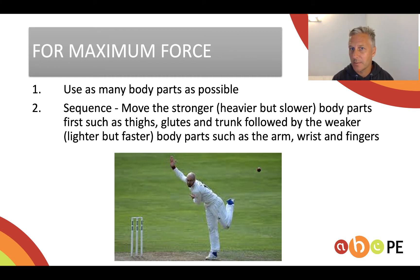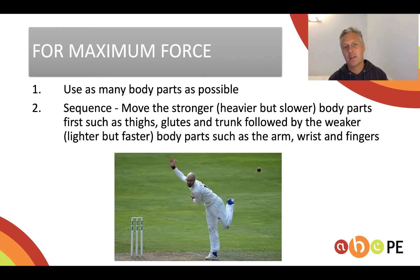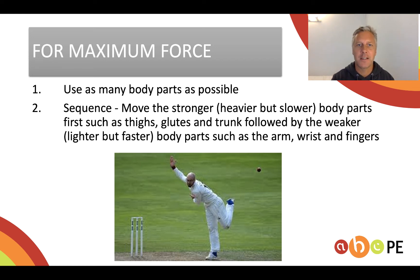Remember: mass times velocity. And then we start to bring in body parts that are smaller, weaker, lighter but faster — such as the arm, wrist and fingers. The fastest body part needs to be the part that touches the ball at the last moment so that the ball flies off at the fastest velocity.